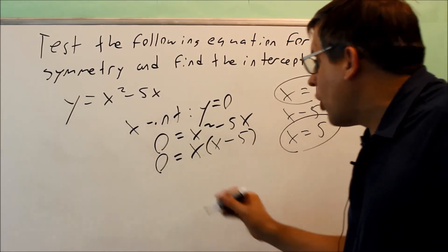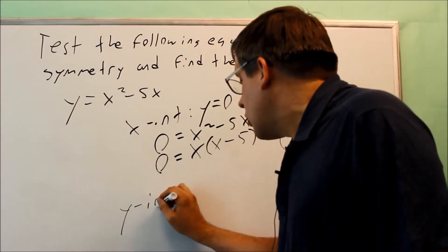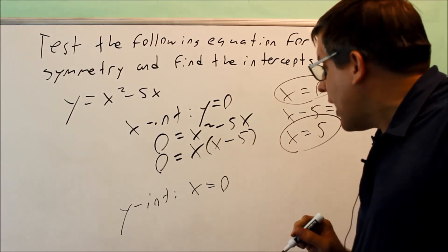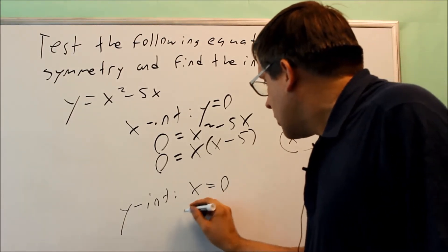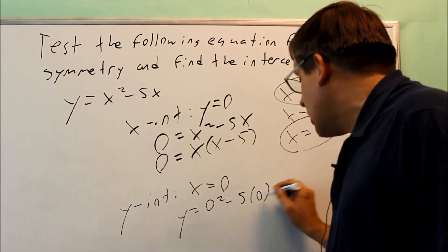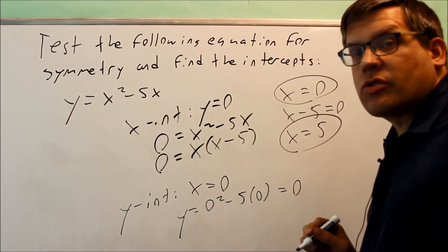To find the y-intercept, we set x = 0. This gives y = 0² - 5(0) = 0.